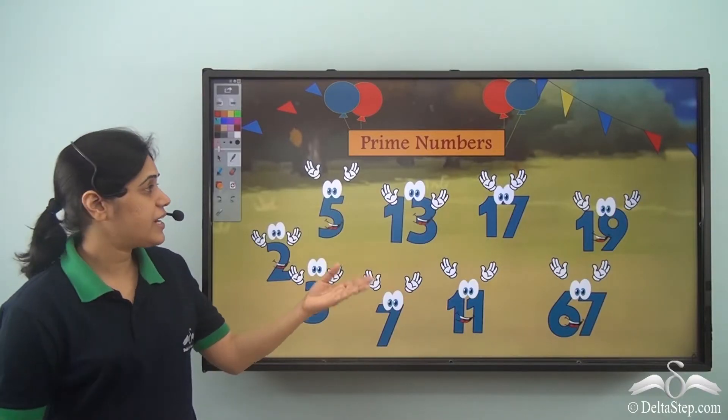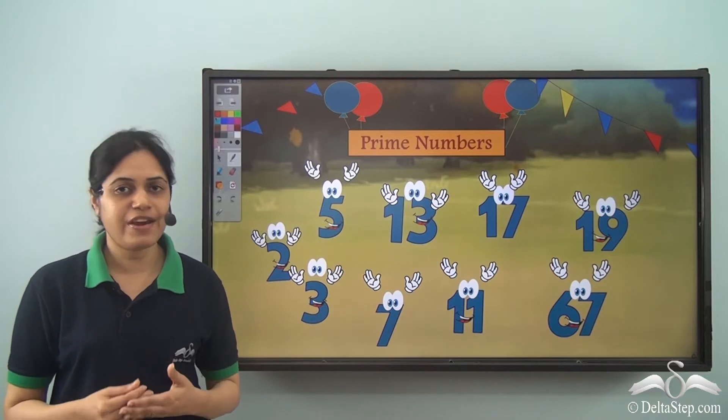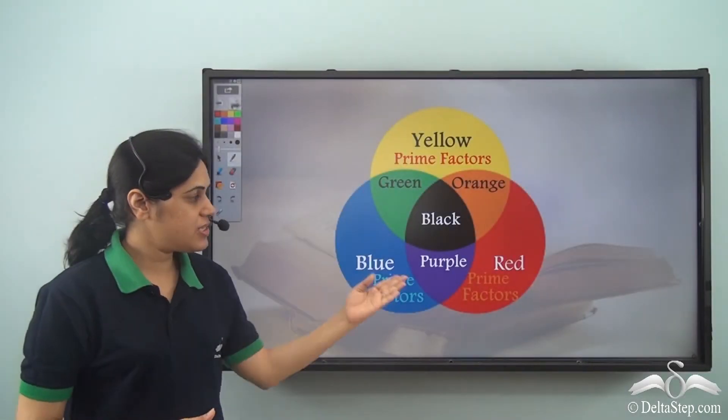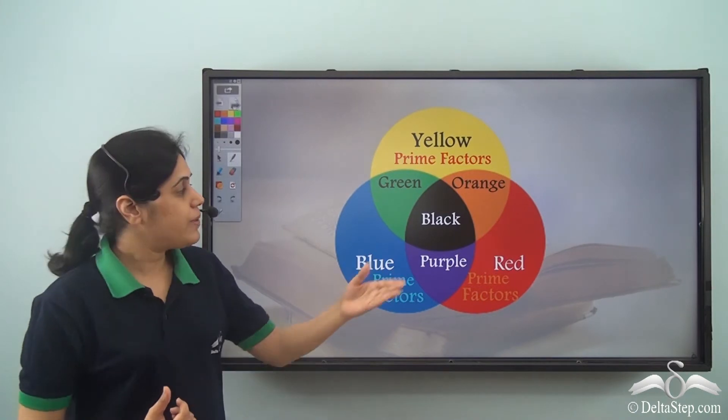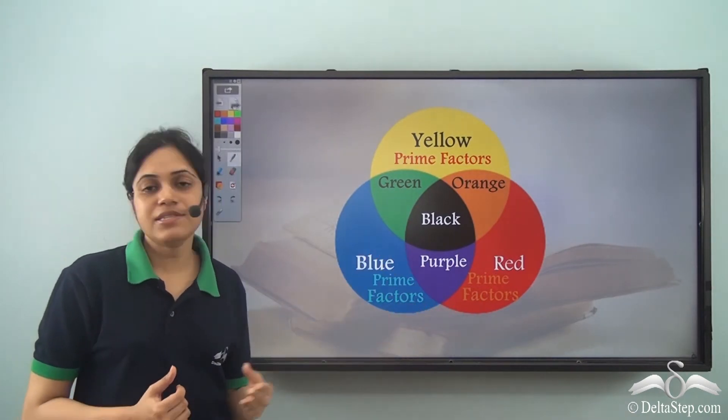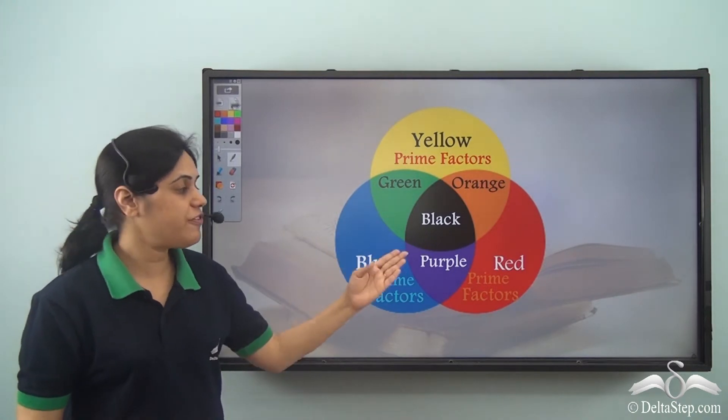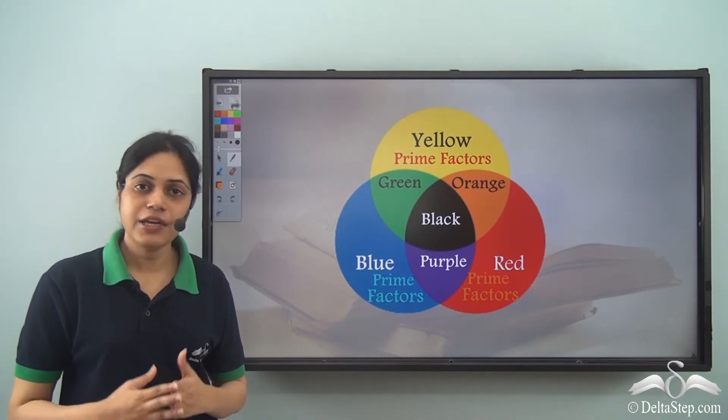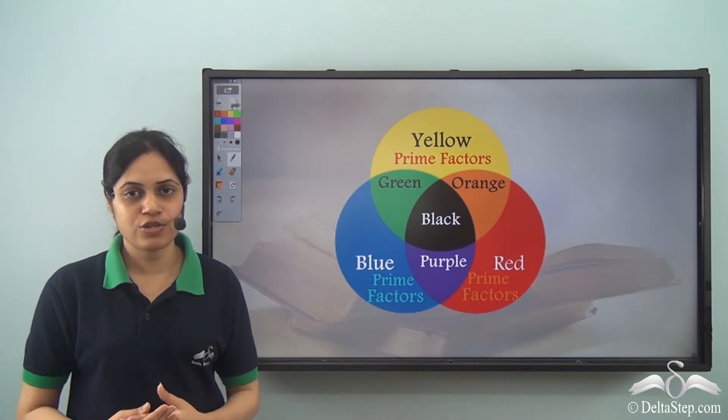We have learned that prime numbers are very special because these numbers are just like primary colors. Just like these colors combine to give us different colors, prime factors also combine to give us all the factors of a number.